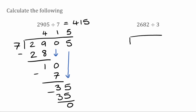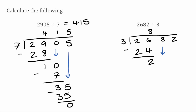And for our final example today, we have 2,682 divided by 3. So 3s into 2 don't go, so we move along to our next digit. 3s into 26 will go 8 times because 8 times 3 is 24. So we're then going to do 26 take away 24, which leaves us with 2. Now we bring down our next digit. So bringing down the 8, I've now got 28. We can fit 9 threes into 28 because 9 times 3 is 27. So we've got 28 take away 27, which leaves us with 1.